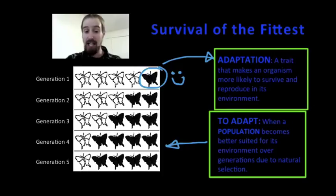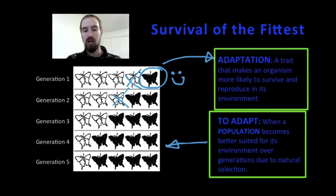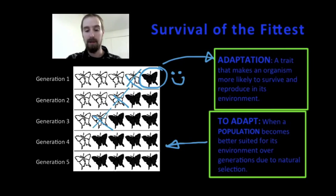This adaptation allowed the population to adapt to the changes in its environment, because without this adaptation it is likely that very few of the peppered moths would have survived. That's why some species go extinct — they simply do not have the traits or variations to help them deal with extreme changes in the environment, and it can mean doom for a population.